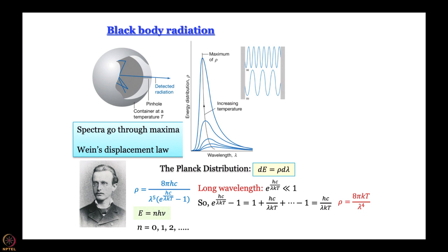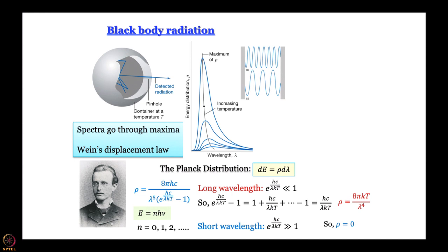So in the long wavelength limit, Planck's distribution is the same as Rayleigh's distribution. More importantly, at short wavelength e^(hc/λkT) becomes much much larger than 1, so the denominator is huge — close to infinity — and ρ becomes 0. What we are saying is that Planck's distribution actually goes through a maximum and becomes 0 at very high frequency. When you compare this distribution with the experimental spectrum at a given temperature, they match perfectly — that is why Planck's distribution is widely accepted.